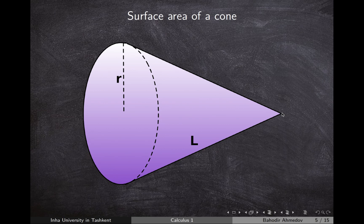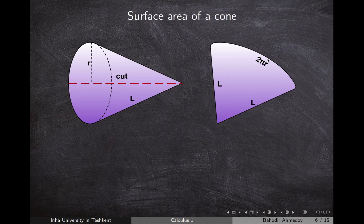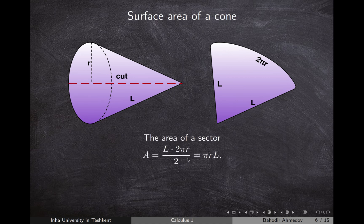Now let's find the surface area of revolution of a simple cone with radius of the base R and length of the side L. We use the same idea — cut it and open it up, and we get the shape of a sector of a circle with radius L. The area of a sector of a circle with radius L and arc length 2πR is equal to L multiplied by 2πR divided by 2, which equals πRL. So the surface area of revolution of the cone with radius R and side L is equal to πRL.